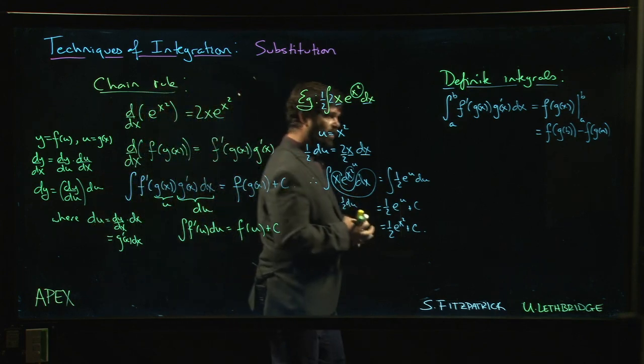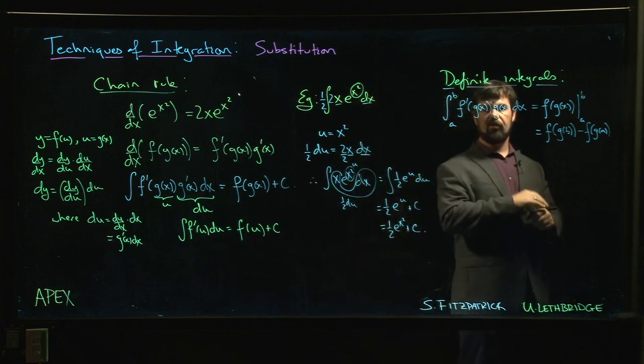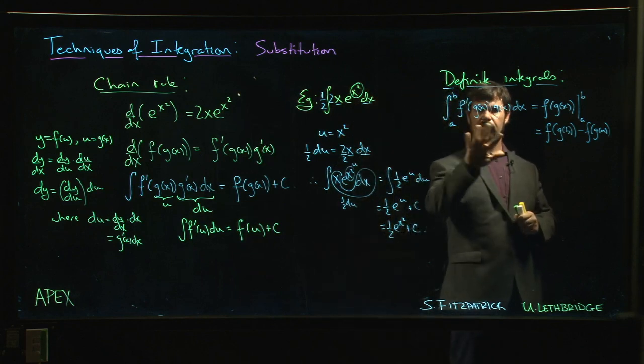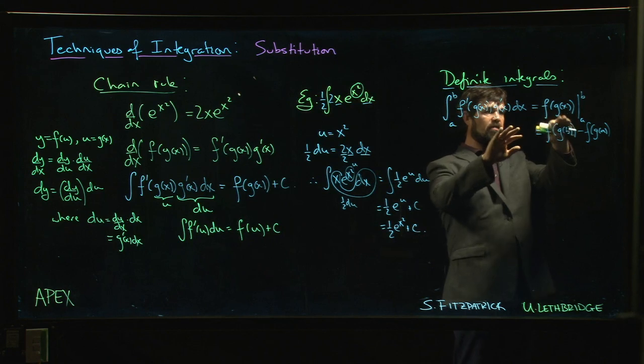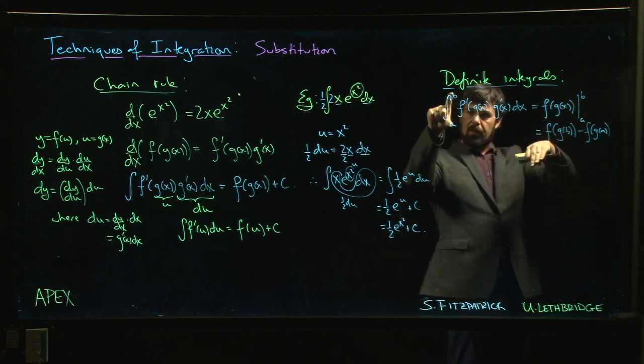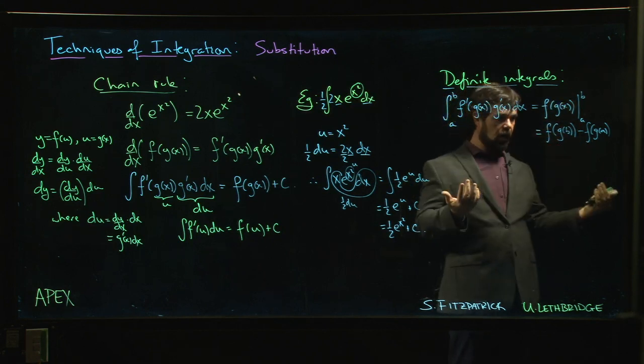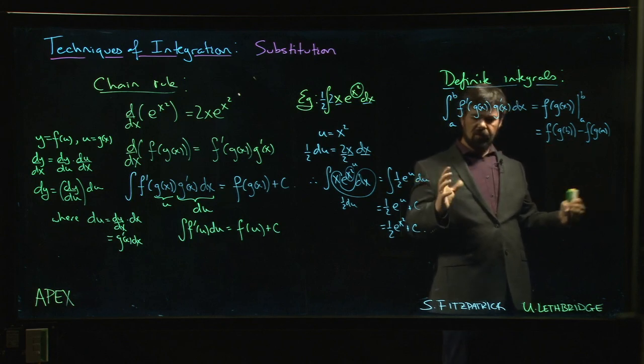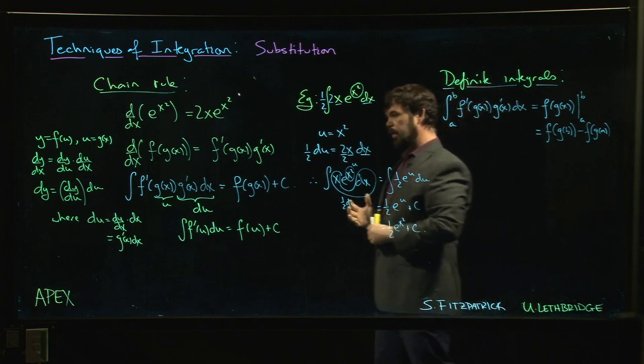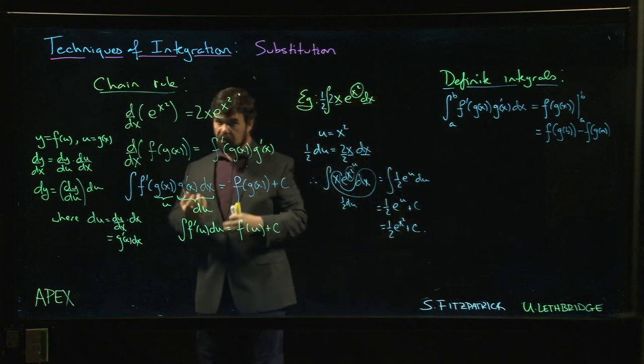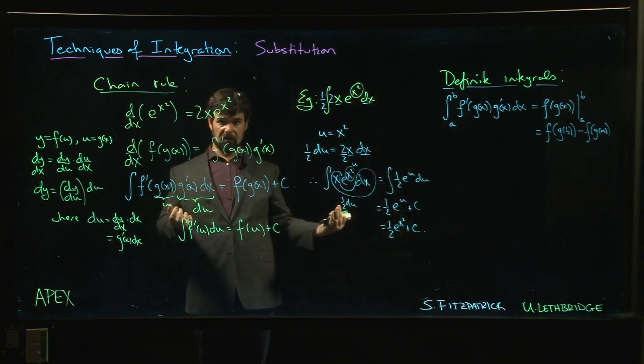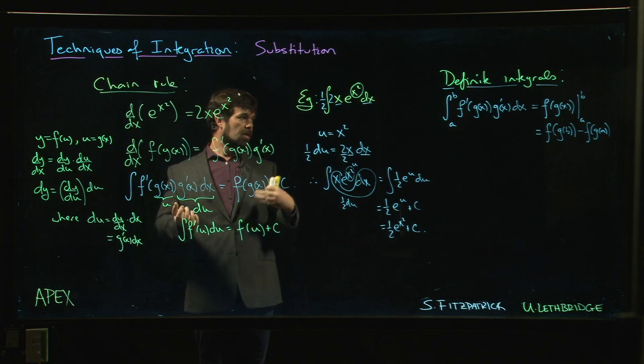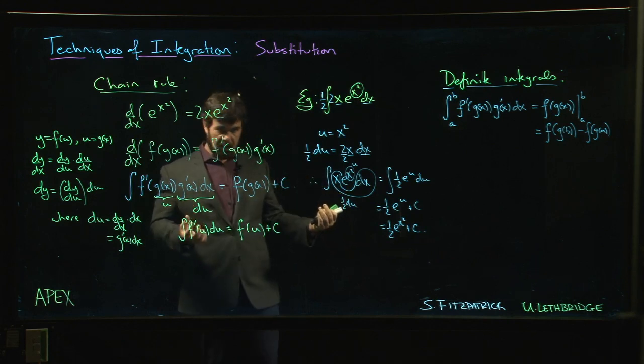Right, because if somebody hands you a definite integral like this, you say, oh yeah, I do my substitution thing, I get to my f of g of x, I plug in the original endpoints a and b, I've got my answer and I'm done. This kind of obscures a little bit what's going on, and later on if you go on to, say, multi-variable calculus and you look at substitution there, you might miss the point a little bit. It's good to kind of see exactly what's going on here.